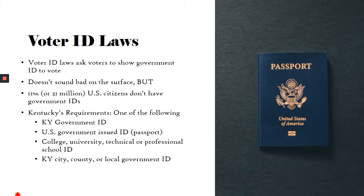Voter ID laws make it a little bit harder to actually vote. In Kentucky, our voter ID laws require you to have your ID when you go to vote. Acceptable forms include a Kentucky government ID such as your driver's license, a United States government-issued ID like a passport, a college, university, technical, or professional school ID, or a city, county, or local government ID — which is what you'd most likely have if you don't drive.